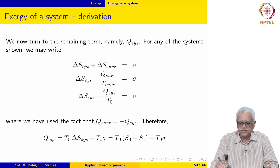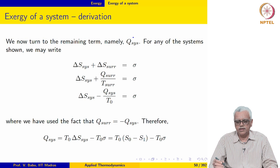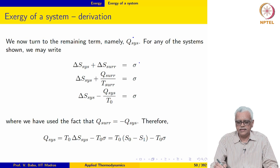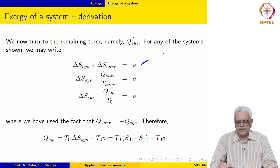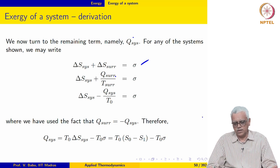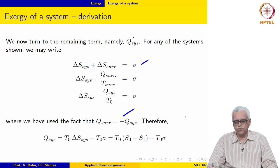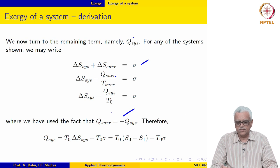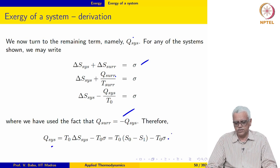Let us take the next term which is QSYS. We may write delta S system plus delta S surroundings for any of the systems that we considered earlier. Delta S surrounding is nothing but Q surrounding over T surrounding, and Q surrounding is minus QSYS. So we may write this and finally write QSYS equal to this.